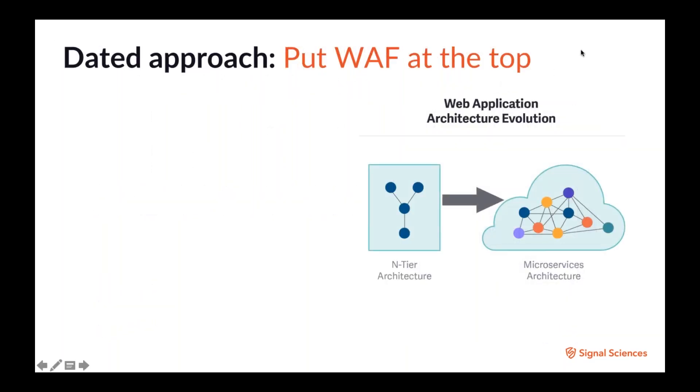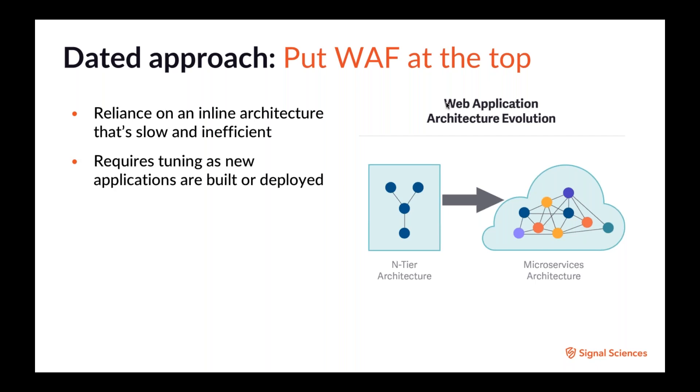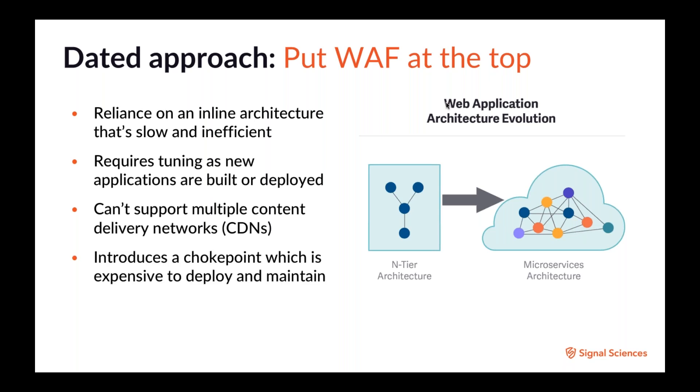So let's talk about the needs for basically where the WAF lives and why that is. Usually the WAF used to be put at the top of an interior architecture, but there's some issues with that. Basically, you're relying on an inline architecture that's slow and inefficient. The WAF requires tuning as new applications are built or deployed, and you can't support multiple content delivery networks. And it basically becomes a choke point that's expensive to deploy and maintain.